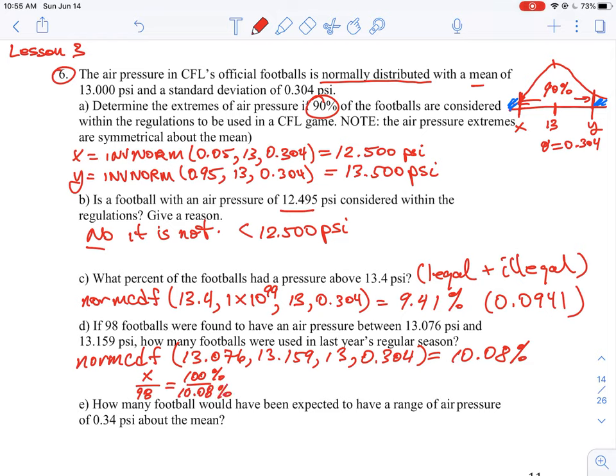So we just need to do a simple cross multiply and solve for X. So X is, in this case, is going to be equal to 98, change 100% to a decimal, so that's just 1.00, and then we're going to divide the whole thing by 0.1008. And that will give us a total of about 972 footballs were used. So there's a larger number of footballs, but only a certain 10% of those, about 98, were within that certain range.